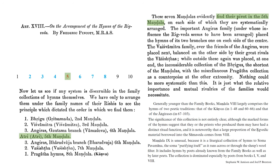And about the ninth mandala, they write: Mandala 9 is unusual because it is a liturgical collection of hymns to soma pavamana, the soma purifying itself, as it runs across or through the sheep's wool filter. Now, the significance of this organizational schema is not fully understood, especially in relation to the poetics which we would expect to be governing their ordering. Although, Frederick Pincott has hinted at the presence of the poetics, writing: Now let us see if any system is discernible in the family collection of the hymns themselves. These seven mandalas evidently find their pivot in the fifth mandala, on each side of which they are systematically arranged.